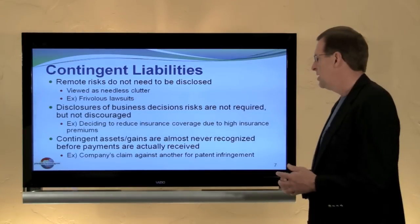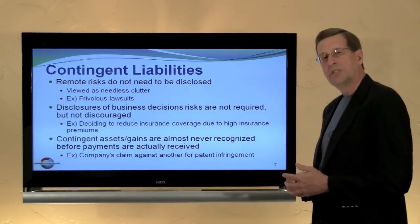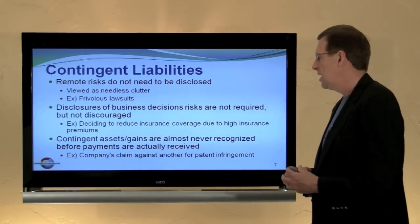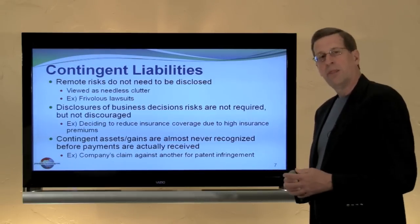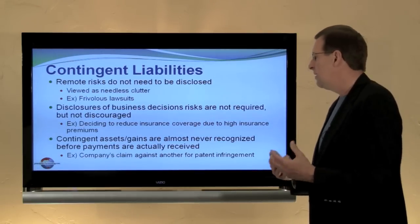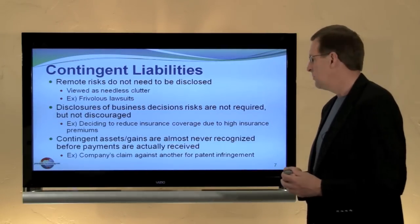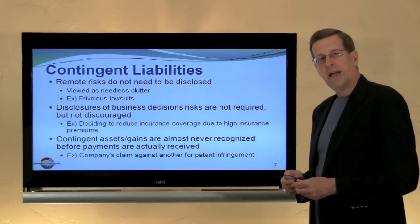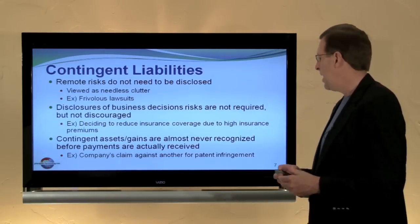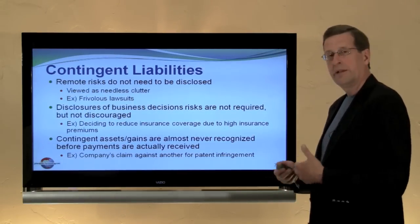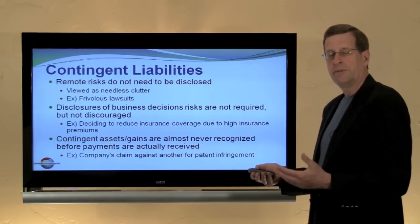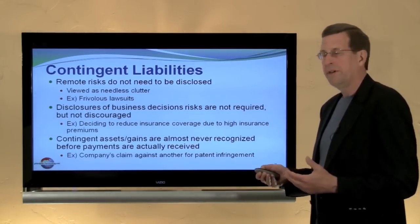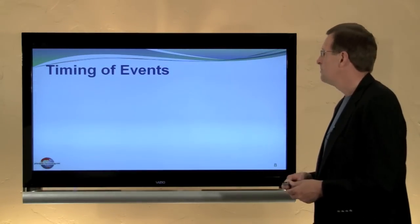Contingent assets or contingent gains are almost never recognized in the financial statements — at least never until the payment or the benefit is actually received. For example, a company's claim against another company for a patent infringement, while it could be significant and material, we ordinarily would not report that as a benefit or an asset.